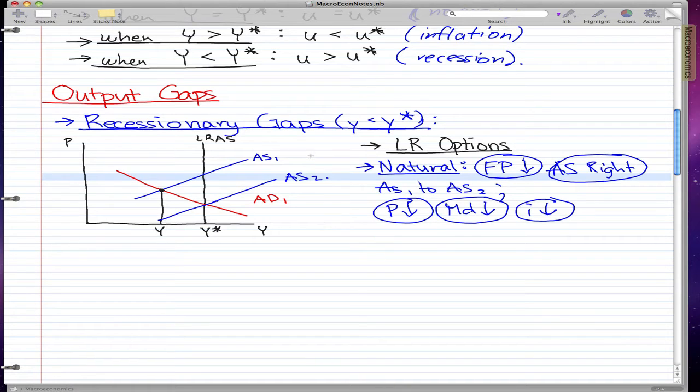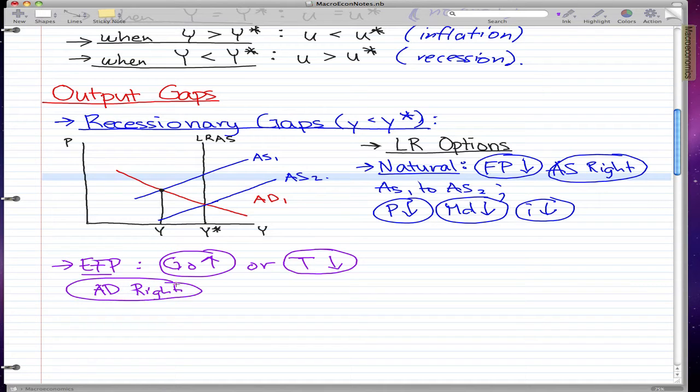Now the other way is doing expansionary fiscal policy. This is when we know that government spending goes up or taxes go down, and this leads to the following to happen. This leads to the aggregate demand to move right. AD1 moves to AD2, and here we just have to draw this purple line to represent AD2.